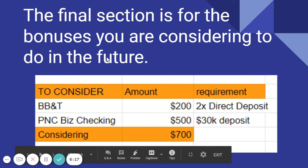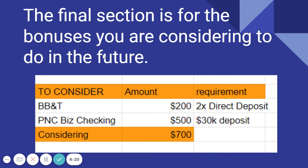The final section is for bonuses you are considering in the future — stuff that may or may not go in the pipeline. This is broken down to: to consider, amount, and requirement. You can find these on websites such as everybankbonus.com — shout out to Phil — or Doctor of Credit. BB&T is a $200 bonus requiring two direct deposits. Earlier in 2020 I received a $600 BB&T bonus, so obviously $600 is much better than $200.